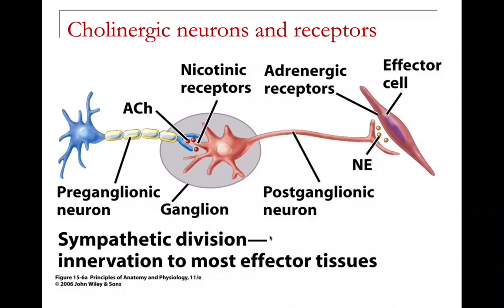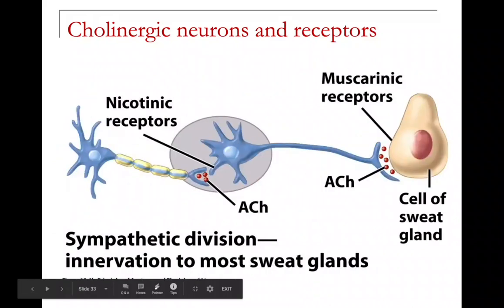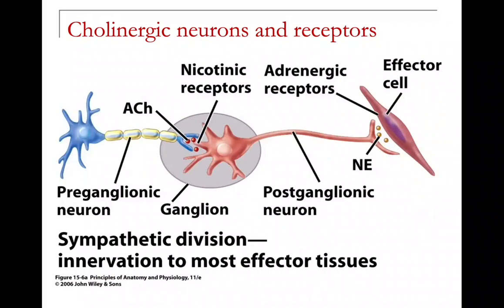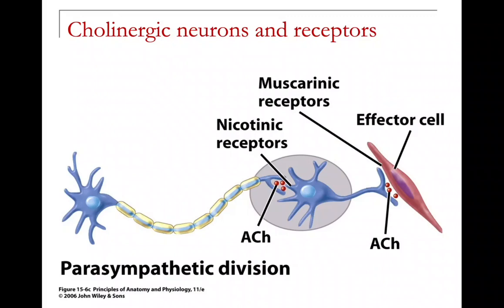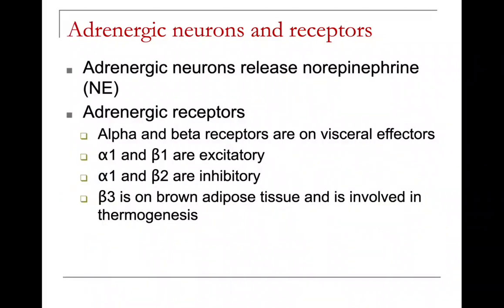In the sympathetic division there is innervation to most effector tissues, showing both nicotinic and muscarinic receptors — nicotinic at the ganglia and muscarinic at most sweat glands. Adrenergic neurons release norepinephrine. Alpha and beta receptors are found on visceral effectors: alpha-1 and beta-1 are excitatory; alpha-2 and beta-2 are inhibitory; beta-3 is on brown adipose tissue and is involved in thermogenesis.